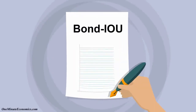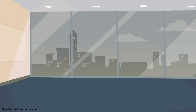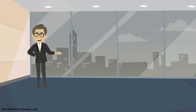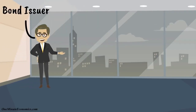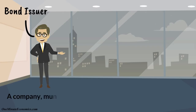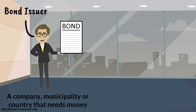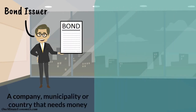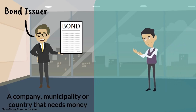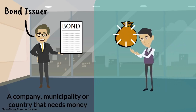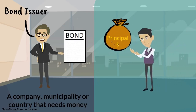A bond is basically a loan. An entity such as a company, a municipality, or a country needs money and issues a bond. That entity is called the bond issuer, and the amount of money it receives is called the principal.